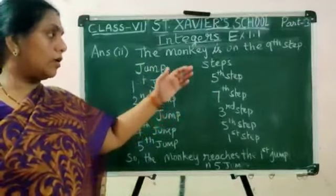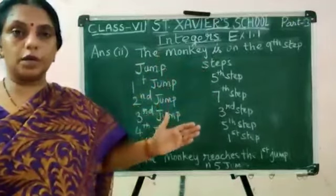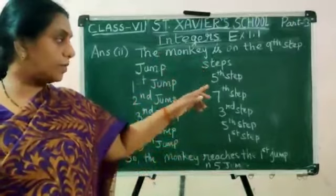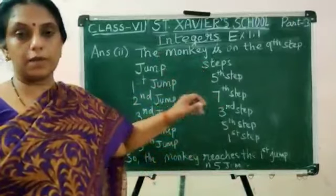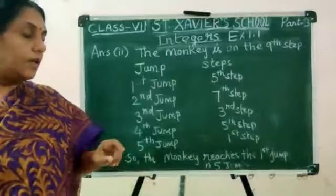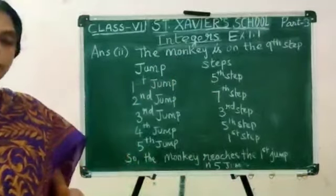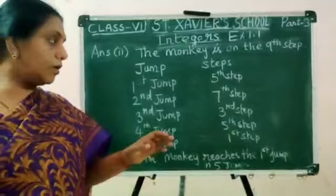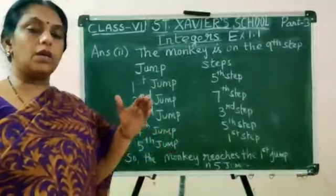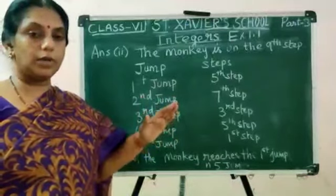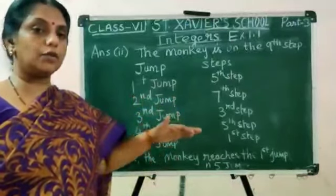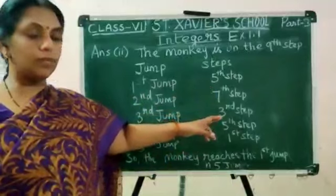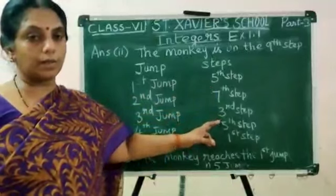The 2nd jump: from the 5th step, it will go 2 steps down. So 5 plus 2, it will become the 7th step. Then the 3rd jump: from the 7th step, again it goes 4 steps up. That means 7 minus 4 steps it will go, so 7 minus 4, it will become the 3rd step.